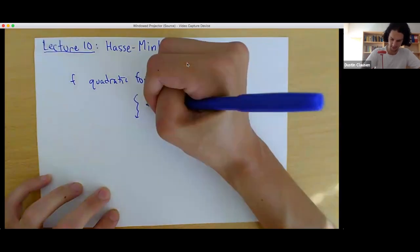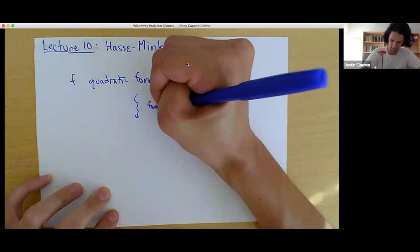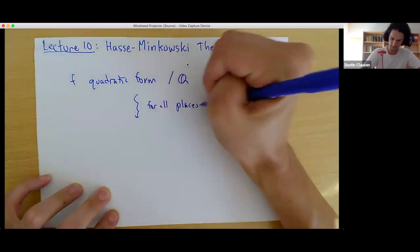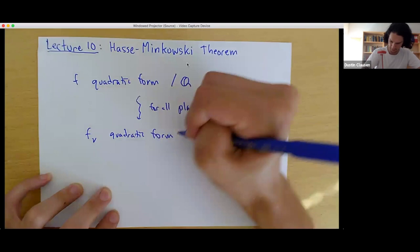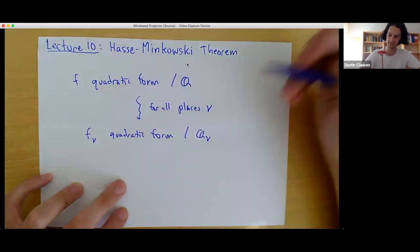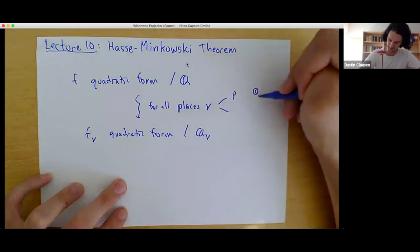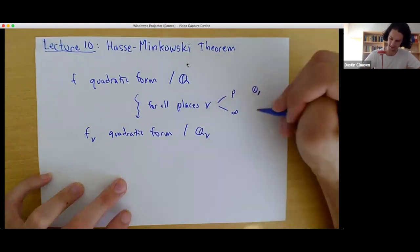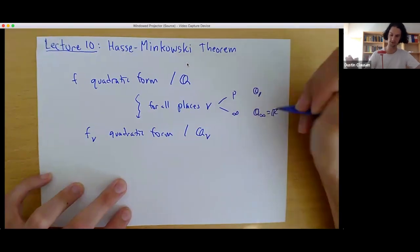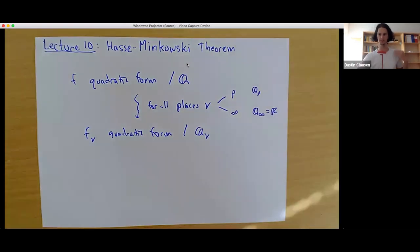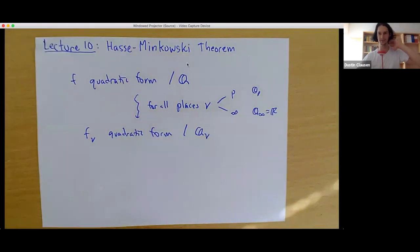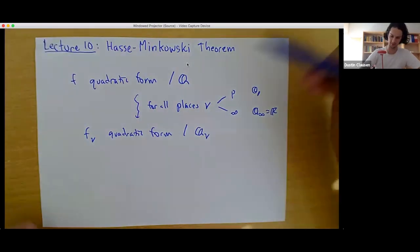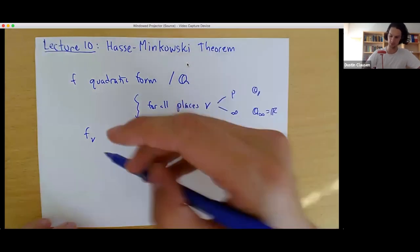For every place V, you then get a quadratic form over the completion Q_V. A place V is either a prime P and then Q_P is the P-adics, or it's a formal thing called infinity where Q_infinity is the real numbers. So these places are just a way of parameterizing the possible completions of the rational numbers. If you have a quadratic form over Q, you get a quadratic form over Q_V — just take the same coefficients in your homogeneous polynomial.